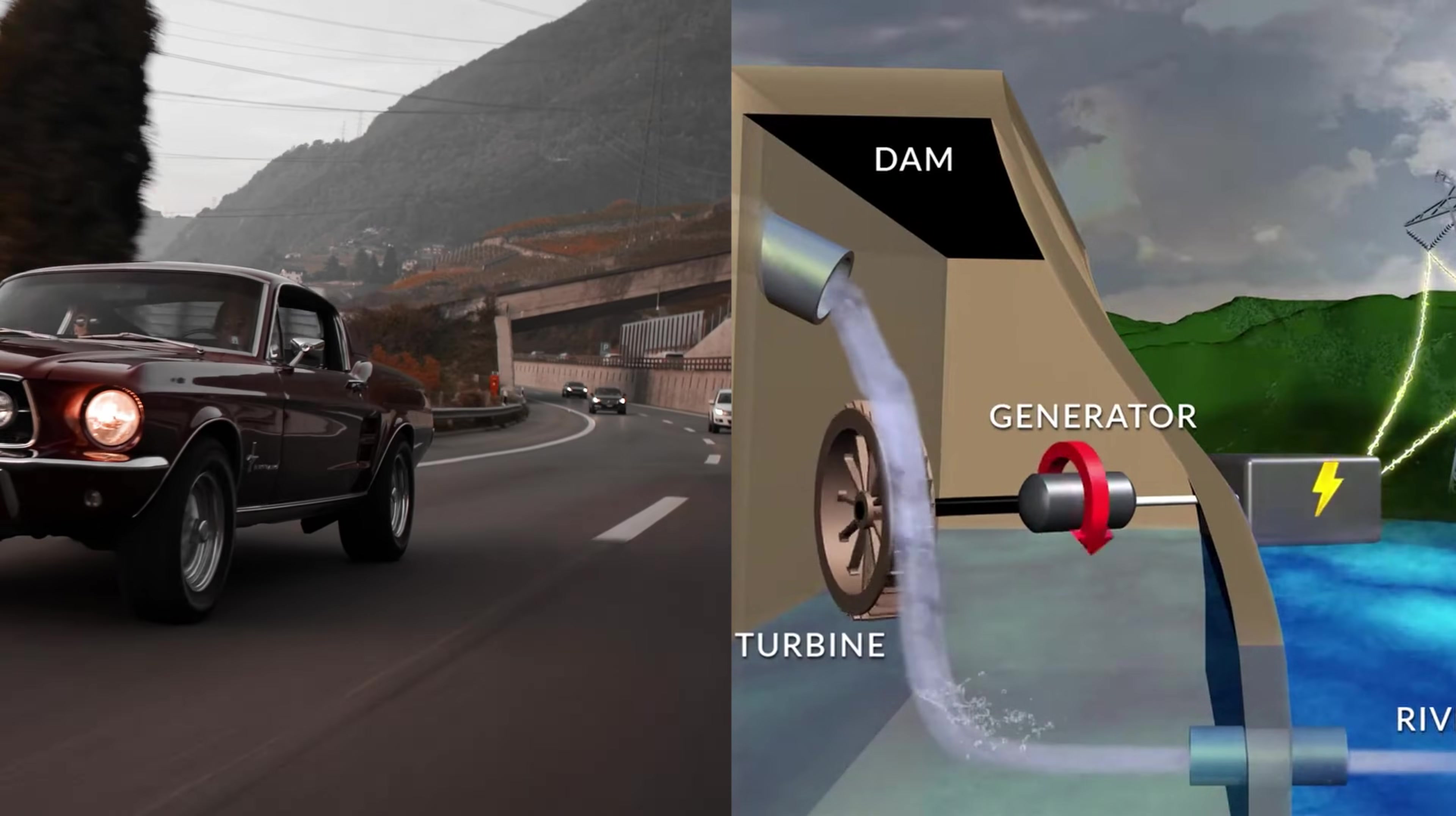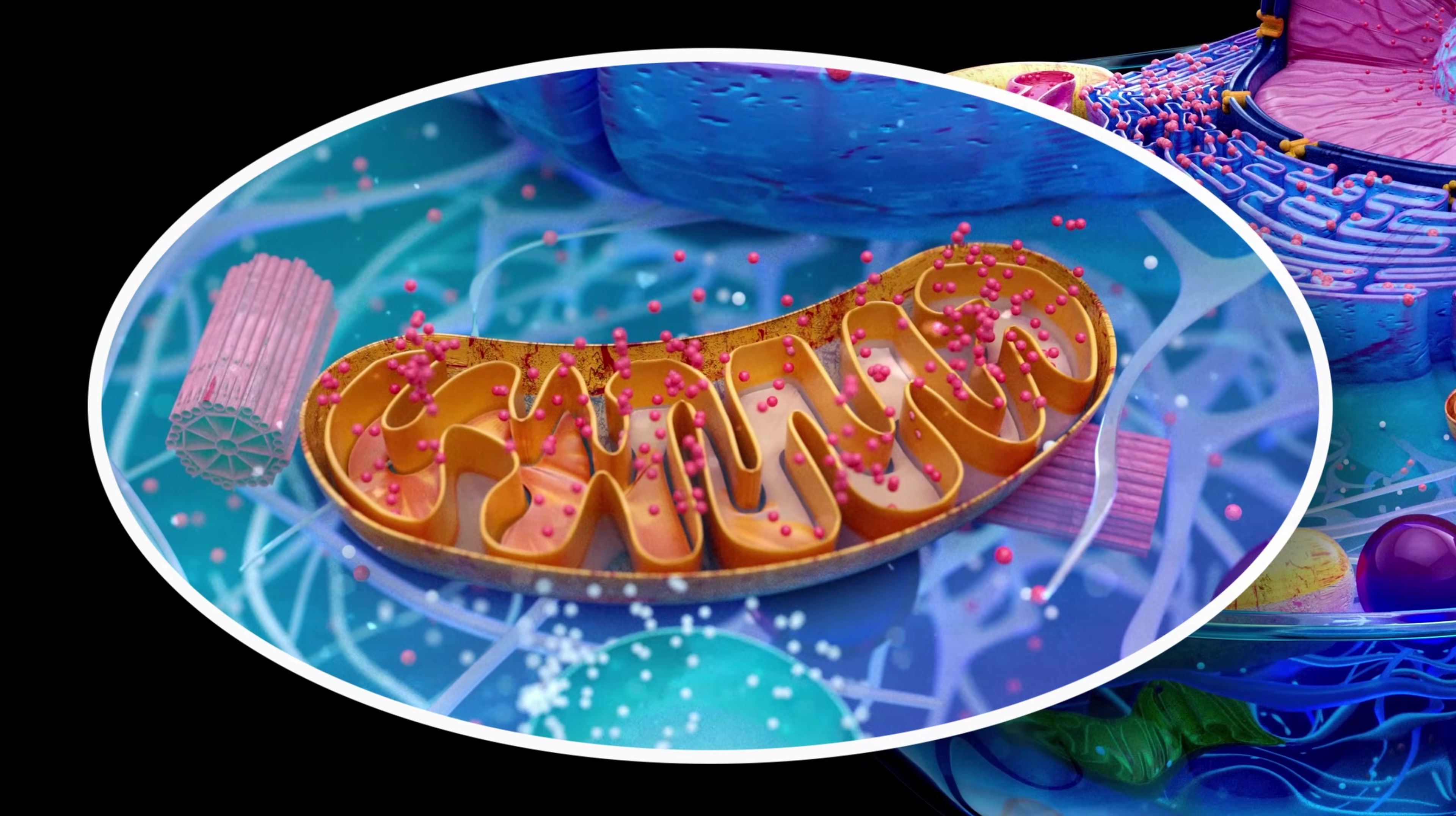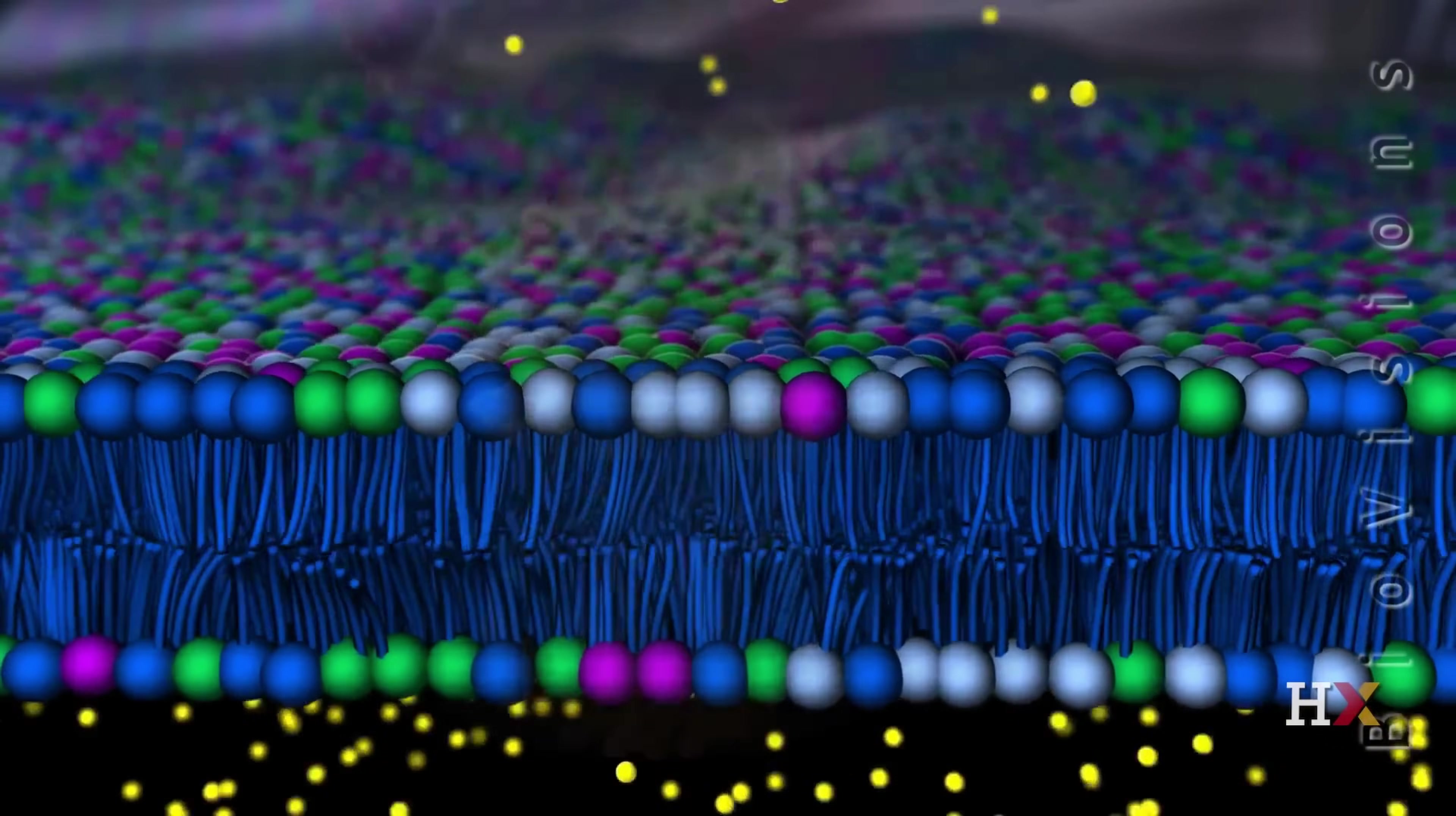An exact replica of what happens in dams and this car engine happens in the mitochondria in our cells. We can call mitochondria the power plant of cells. Mitochondria inside the cell, image magnified 10,000 times.